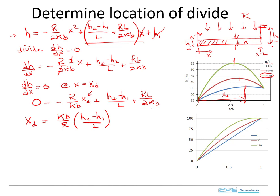If I multiply this last term by KB over R, I just get L over 2. So that's now an expression for the location of the divide.